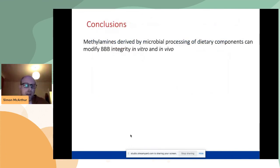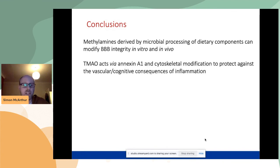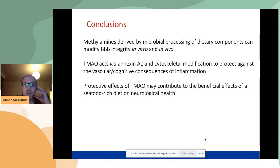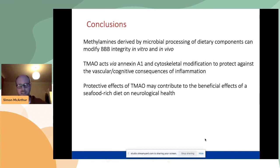To summarize: we show that methyl amines derived by microbial processing of dietary components can modify blood-brain barrier integrity in vitro and in vivo. TMAO seems to work through annexin1 and cytoskeletal modification, protecting and enhancing brain vascular barrier function and protecting from the cognitive consequences of inflammation. We think this may be quite important when considering the effects of a seafood-rich diet on neurological health — we've long known eating fish is good for the brain, assumed to be due to omega-3 fatty acids, but this suggests TMAO may also be playing a role.